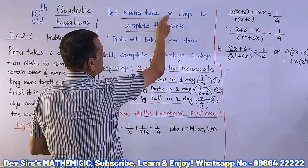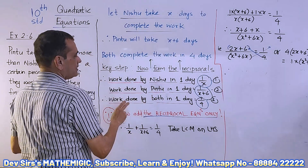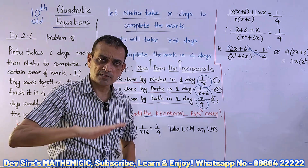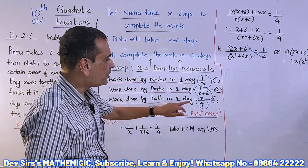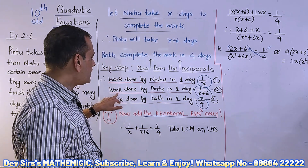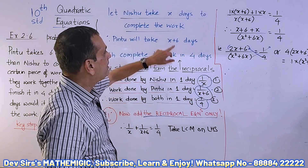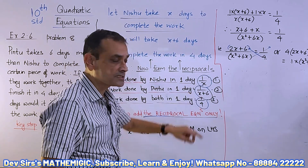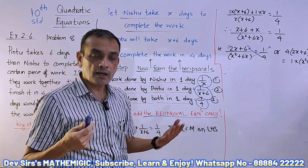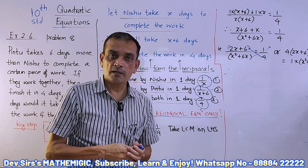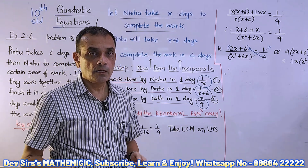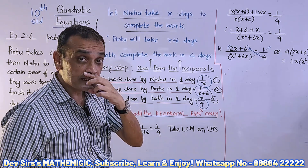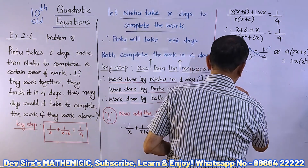Nishu takes x days to complete the work, so work done by Nishu in one day is the reciprocal — one upon x. Work done by Pintu in one day: the reciprocal of (x+6) is one upon (x+6). Now you might wonder how we got this — it is simple. Just take an example: suppose Nishu takes 10 days to complete the work.